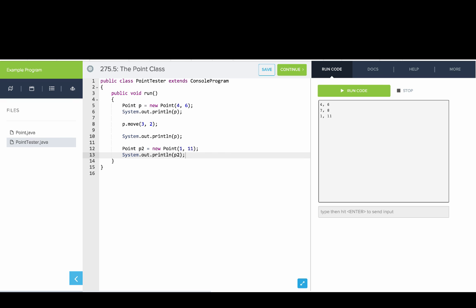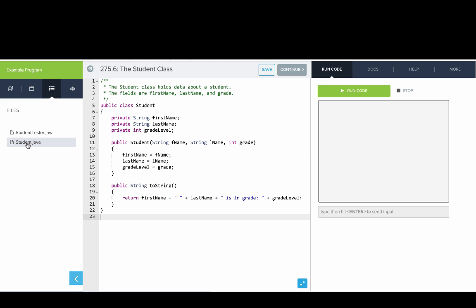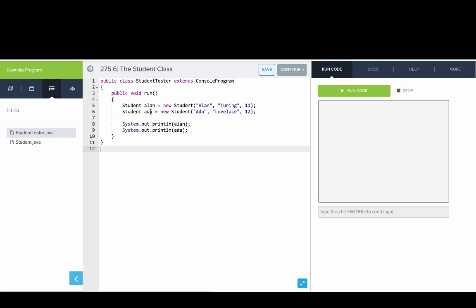And now we'll look at one more example. This was the student class. So you can see on the left in files, we have a student.java class, which represents our template for making new students, and then our student tester, which actually lets us run and test it out. So here's the code that we looked at earlier, which makes a student called Alan and a student called Ada. And then when we run the code, it prints out information about them. So this is a sample of using classes, and we're going to dive more into all the different pieces next.